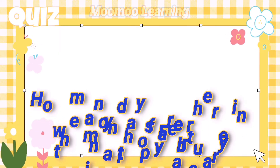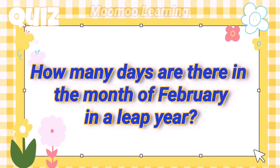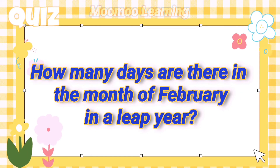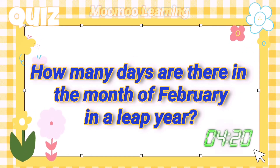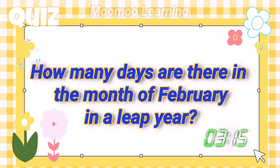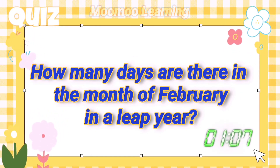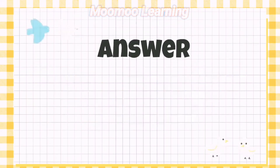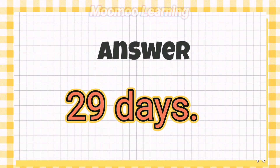How many days are there in the month of February in a leap year? Answer: 29 days.